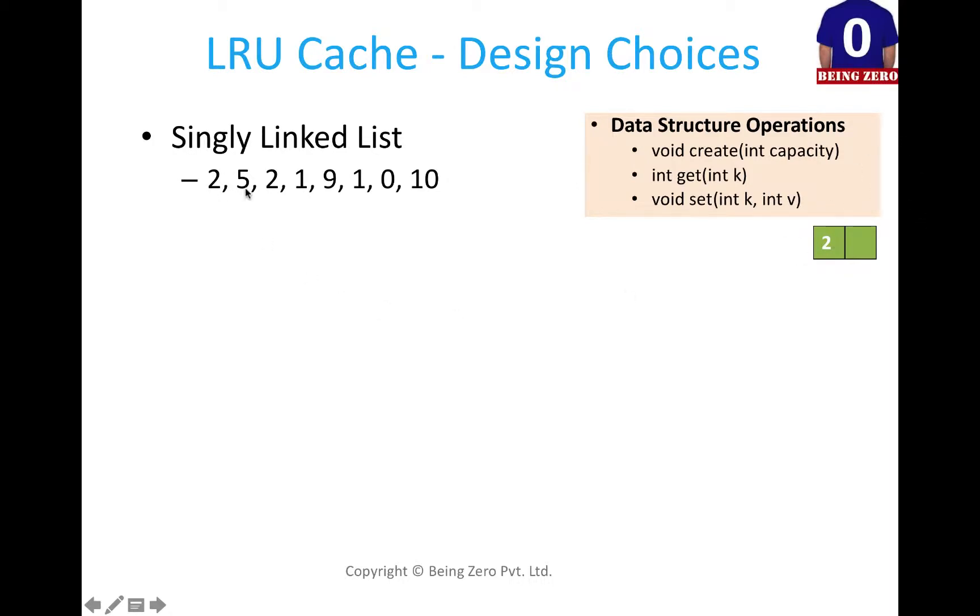Then comes 5, and if something comes next that is more fresh, more fresh items will be inserted in the beginning, and that way stale items will keep moving towards the end. This is the same array concept we are applying to linked list. So 5 comes, 5 is more fresh than 2, so 5 will be inserted in the beginning.